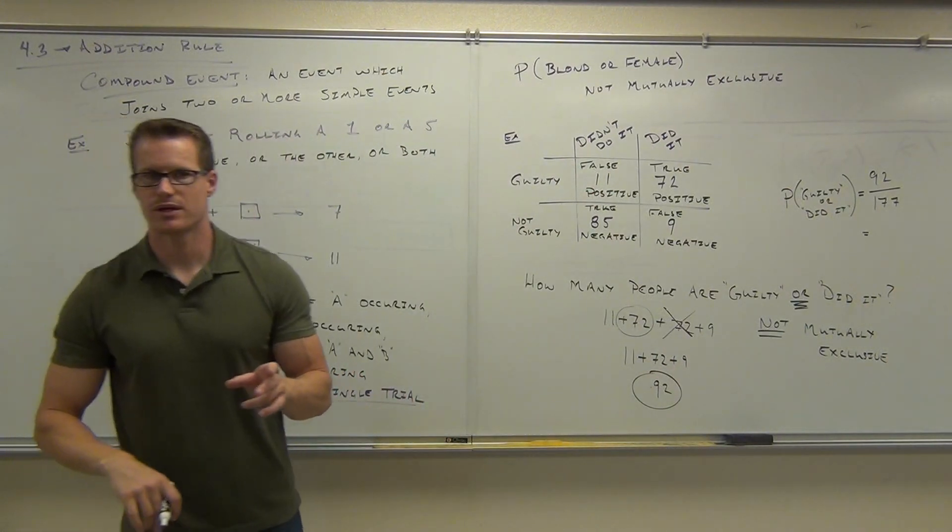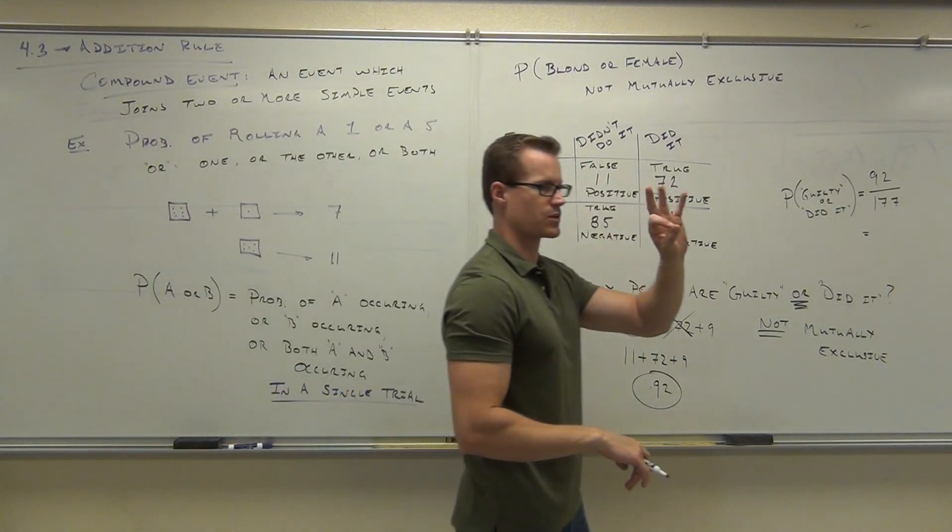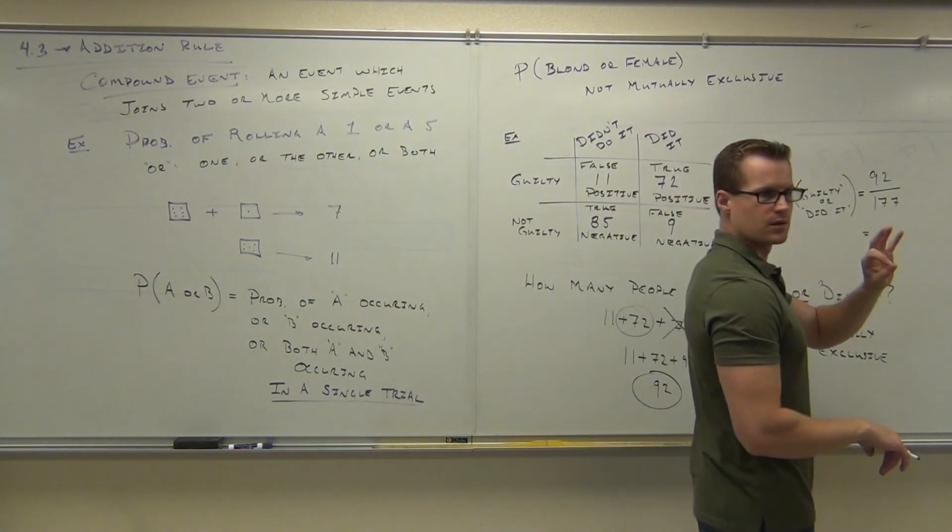I take 92 divided by 177. We're going to get decimal to the third decimal place.